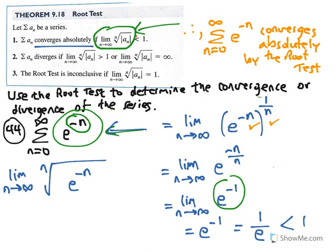In our first example, the limit from the root test was 2, greater than 1, so that series diverges. In this example, the limit is 1 over e, which is less than 1, so the series converges absolutely. If you get a limit equal to 1, you can reach no conclusion — the root test is inconclusive in that case, because the series could be convergent or divergent.